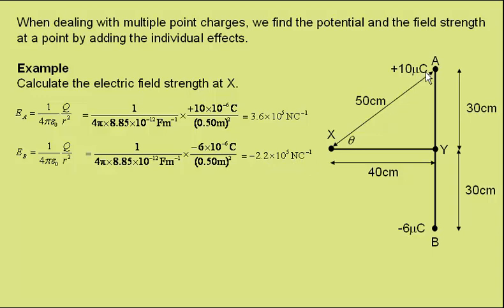Charge A will be producing a field away from it in this direction. Charge B producing a field towards it in this direction.